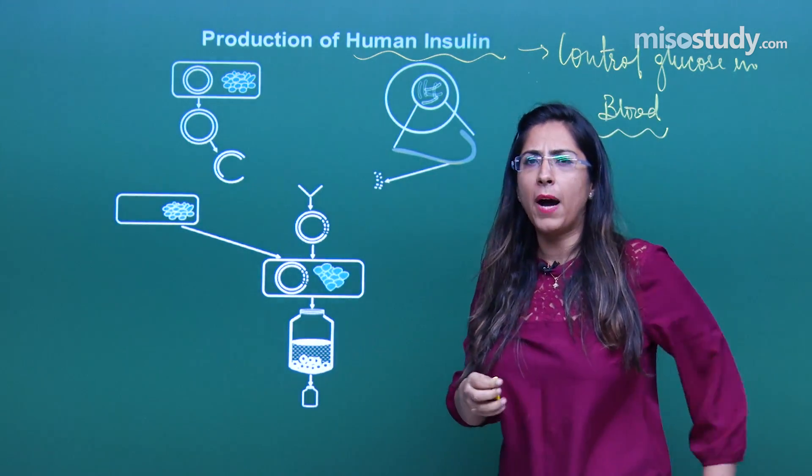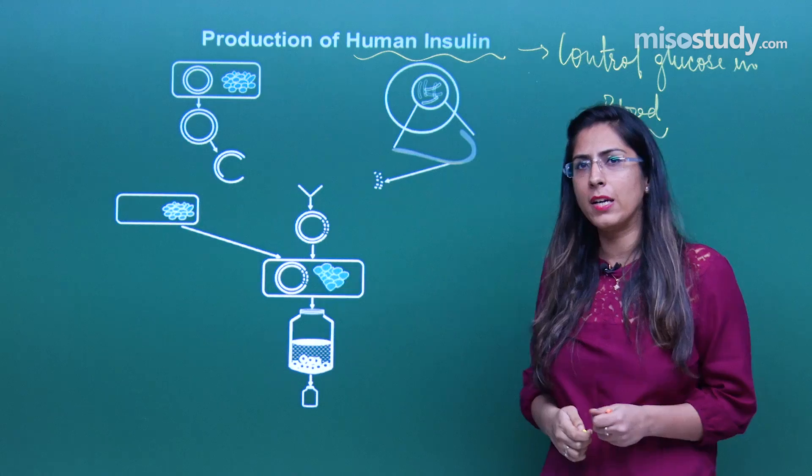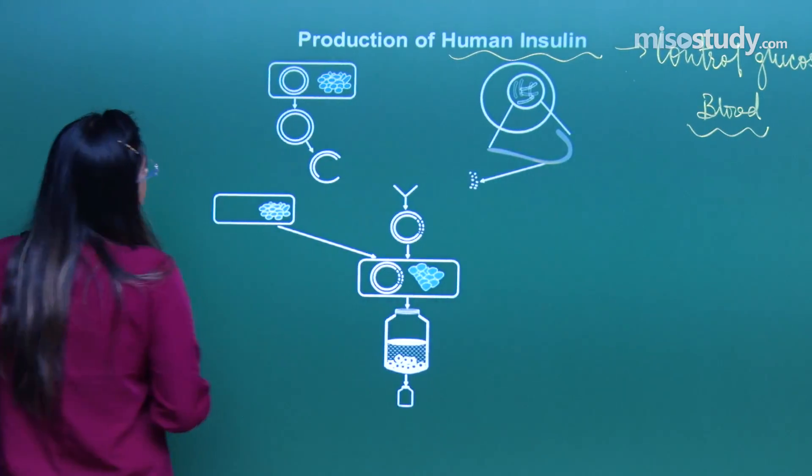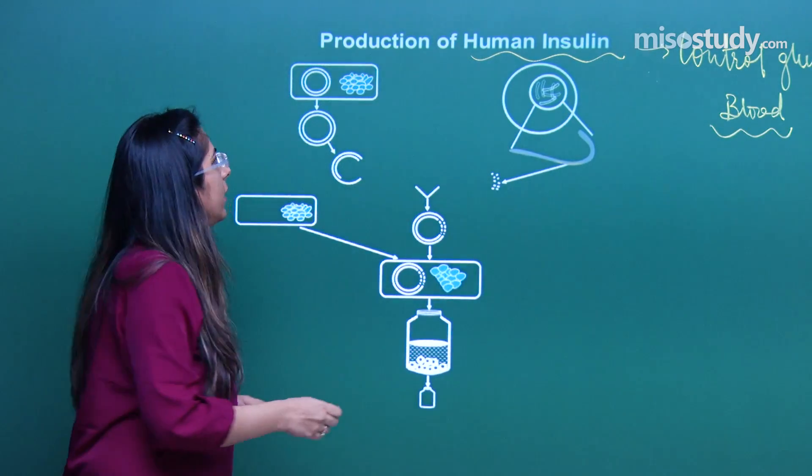With the help of biotechnological tools, it's easy to produce this insulin in laboratory conditions. Let's see how they are produced. For this, we take a particular cell. In this experiment, I have taken E. coli cell.